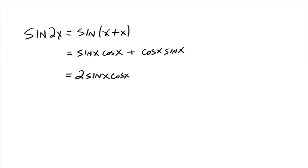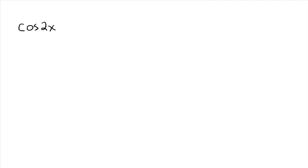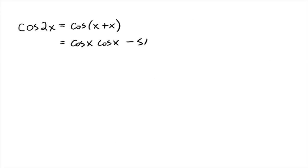Here we've got the sine of 2 times an angle, and it turns out that's the same thing as 2 times the sine of the angle times the cosine of the angle. Now let's look at cosine of 2x — same idea. We could rewrite this as the cosine of x plus x, and then using our sum formula for cosine: cosine of the first angle times the cosine of the second angle, minus sine of the first angle times the sine of the second angle.